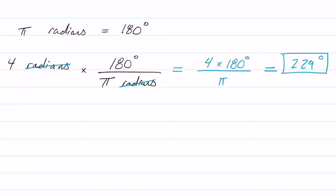So 4 times 180 over π is 229.2, but I would just round it to 229°, and there's my answer.